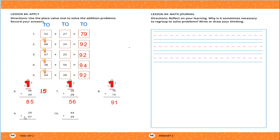Question number 9: 29 plus 57. I will add the digits in the ones place: 9 plus 7 — 9 in my mind and 7 on my fingers. After 9: 10, 11, 12, 13, 14, 15, 16. I will write only 6 and carry up 1. 1 plus 2 equals 3, then 3 plus 5 — 5 in my mind and 3 on my fingers. After 5: 6, 7, 8. So 29 plus 57 equals 86.